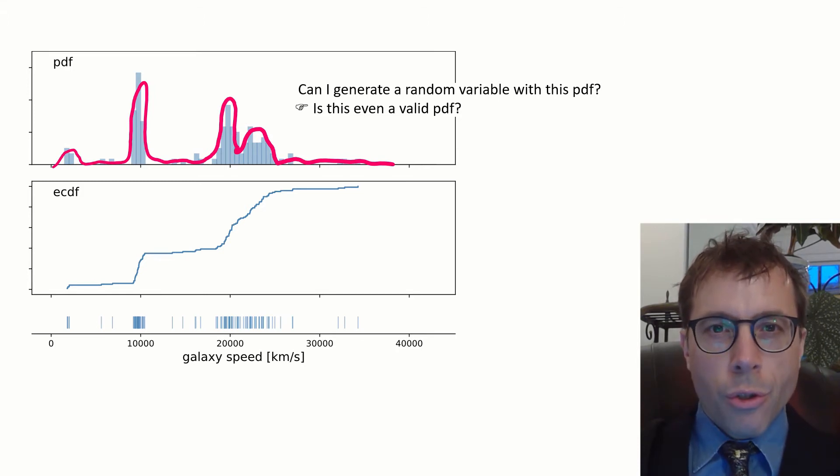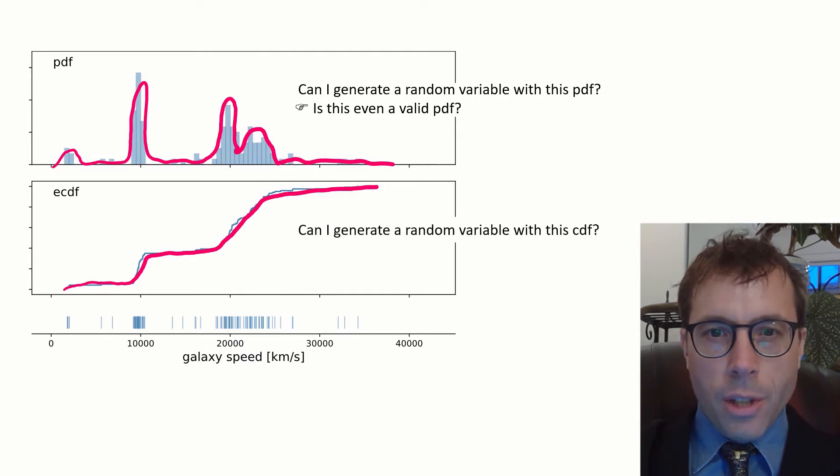A much better idea is to draw a custom CDF. Any custom CDF we draw is legitimate as long as it's an increasing function, or to be technical about it, a non-decreasing function between 0 and 1. So the only question is, once we've got our custom CDF, one which is a very tight fit for the dataset, how do we go about generating a random variable from it?